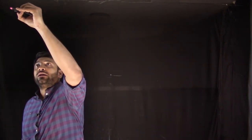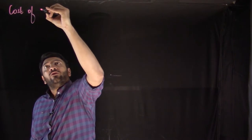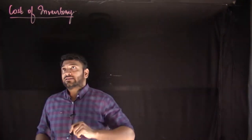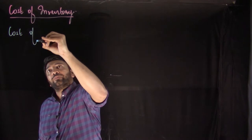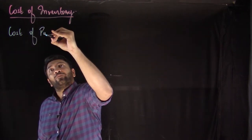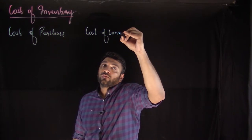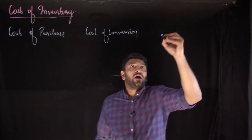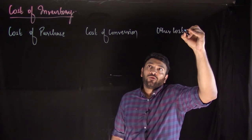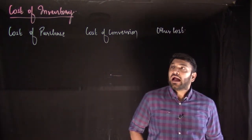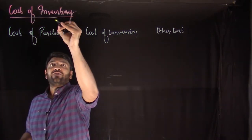Let's try to understand what we include in cost of inventory. We are trying to measure the cost of inventory, and the inclusions and exclusions have to be understood very carefully. When looking at cost of inventory, understand the inclusions include three things: the first one is cost of purchase, the second one is cost of conversion, and the third one is other cost.